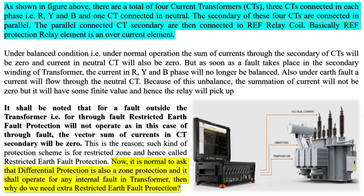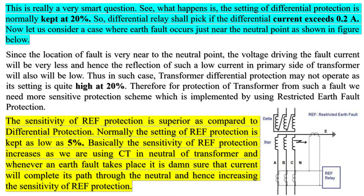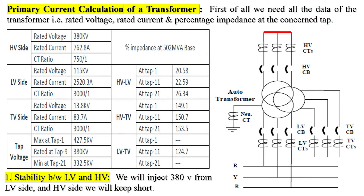Electrical power transformers with a rating of more than 5 MVA have differential protection. A Buchholz relay can detect problems in the transformer that are located inside the insulating oil. However, if a fault develops in the transformer but not in the oil, it cannot be detected. Buchholz relays also fall short of providing adequate protection against any bushing flash.